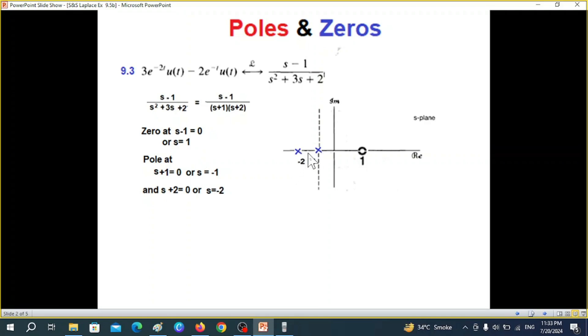At minus one and at minus two we put two crosses and the cross represents a pole. So this was easy.